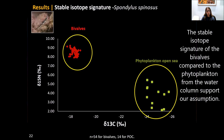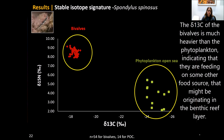The stable isotope signatures of the bivalves compared to the phytoplankton from the water column support our assumption. The delta C-13 of the bivalves is much heavier than the phytoplankton, indicating that they are feeding on some other food source that may originate in the reef benthic layer.